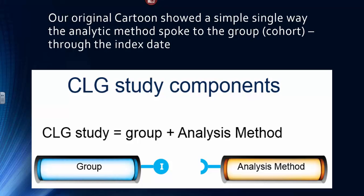Our original cohort of the group and the analysis method had a very simple representation. The representation was of the Index State, and we said the analysis method touches the cohort member through its Index State.